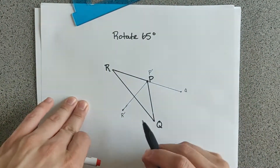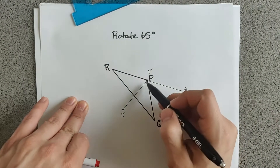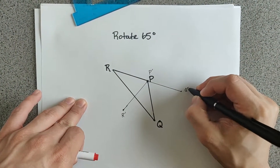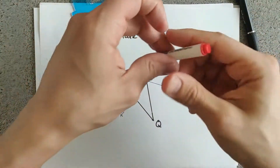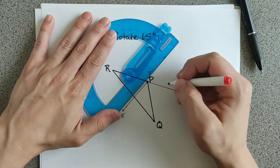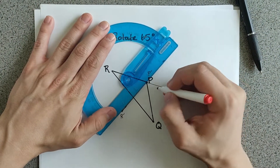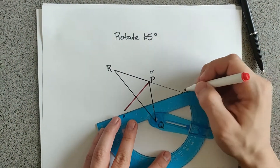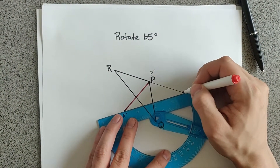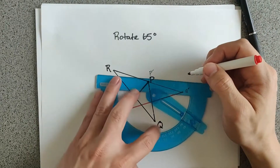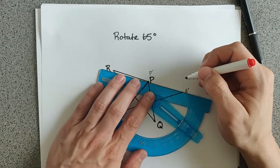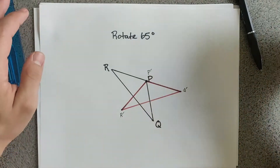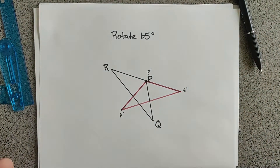As you can see, we now have our three points: P prime, R prime, and Q prime. Just line everything up and play connect the dots. There's one, there's two, and there's three. So there's your triangle rotated 65 degrees.